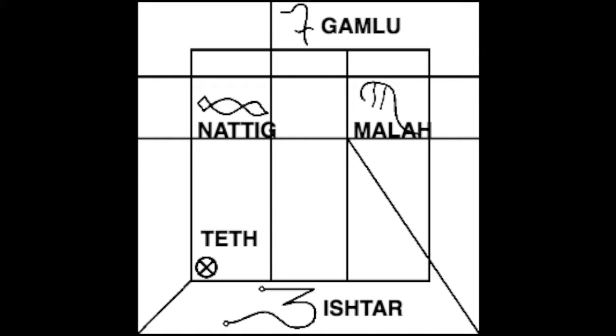Then, if we go up to the left, we have Natig, which is the constellation Scorpio. Then, to the right, we have Mala, which is one of the 50. It's symbolic of courage. It brings courage.